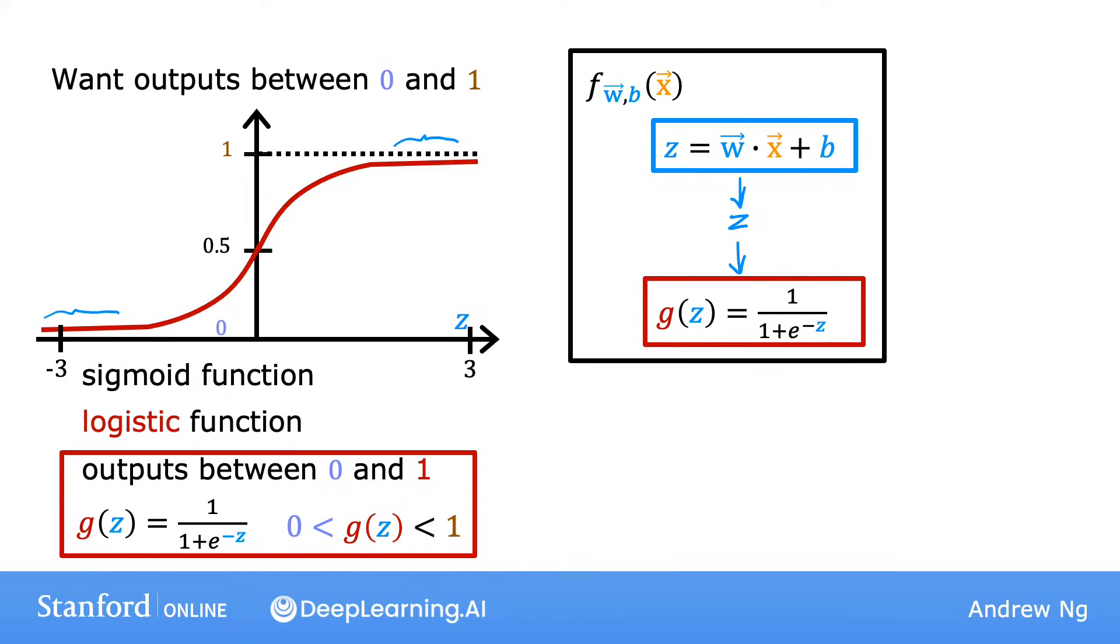When you take these two equations and put them together, they then give you the logistic regression model f of x, which is equal to g of w x plus b, or equivalently g of z, which is equal to this formula over here. So, this is the logistic regression model. And what it does is it inputs a feature or set of features x, and it outputs a number between 0 and 1.